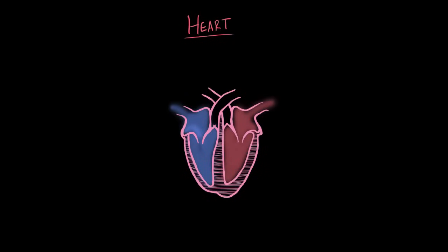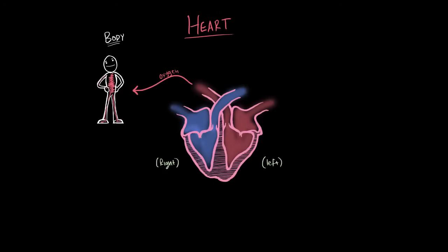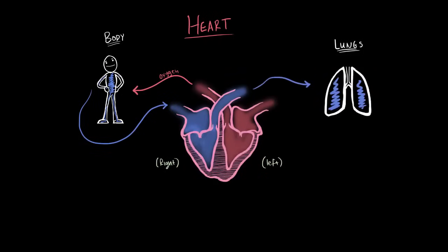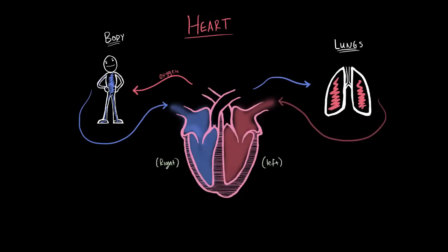Your heart pumps blood essentially to two places. The first place is your body. You have your oxygenated blood on the left side — and we have to remember that the lefts and rights are switched because we're looking at the anatomical view of the heart. So it pumps blood out to your body, your body gets that oxygen, uses it up, and then circulates it back into the right side, where it's pumped out to the lungs, gets re-oxygenated, and then circulates back into the left side.